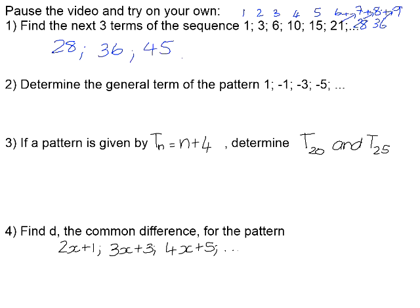Number 2: determine the general term of the pattern 1, −1, −3, −5. We're not adding but subtracting 2 each time, so the general term must go in multiples of negative 2. Looking at position numbers 1, 2, 3, 4: 1 × (−2) = −2, so we need to add 3 to get back to 1. Checking position 2: 2 × (−2) = −4, plus 3 = −1. That's correct, so the general term is TN = −2N + 3.